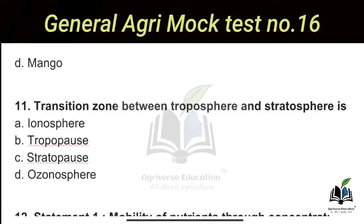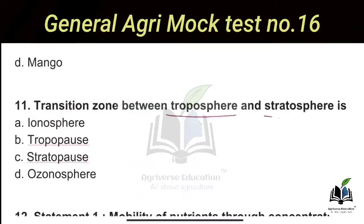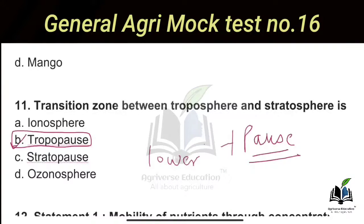The eleventh question: The transition zone between the troposphere and the stratosphere is called what? When we consider the transition zone for the lower layer — the troposphere — it is called the tropopause. Similarly, the transition zone between the stratosphere and mesosphere is called the stratopause. So in the case of the troposphere, the transition zone is the tropopause.